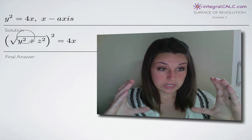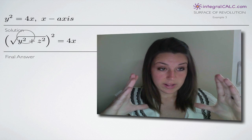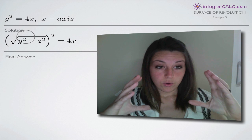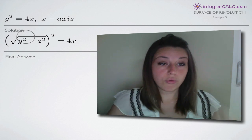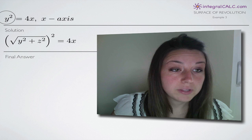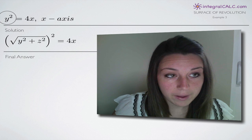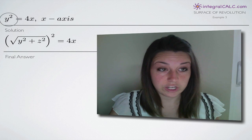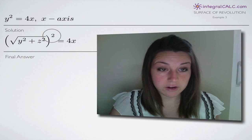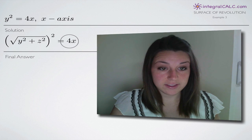So that whole quantity right there in parentheses, the quantity square root of y squared plus z squared, that whole thing is what's going to end up replacing just this y variable in our original function. Everything else, the squared term here stays the same and the 4x stays the same. So you've now set up your solution and all you have to do to get your final answer is simplify.